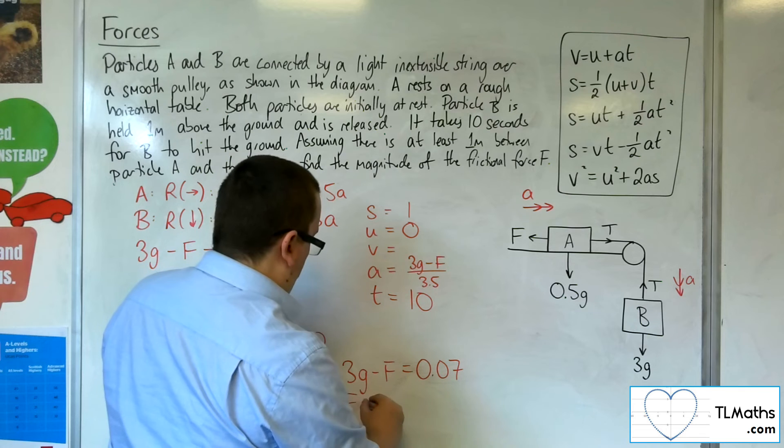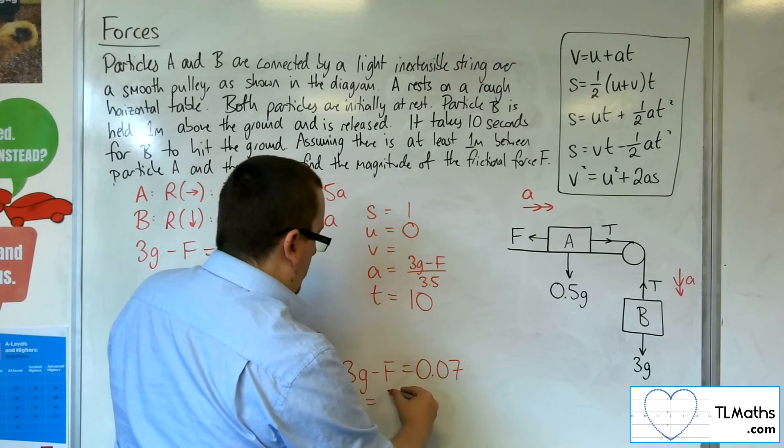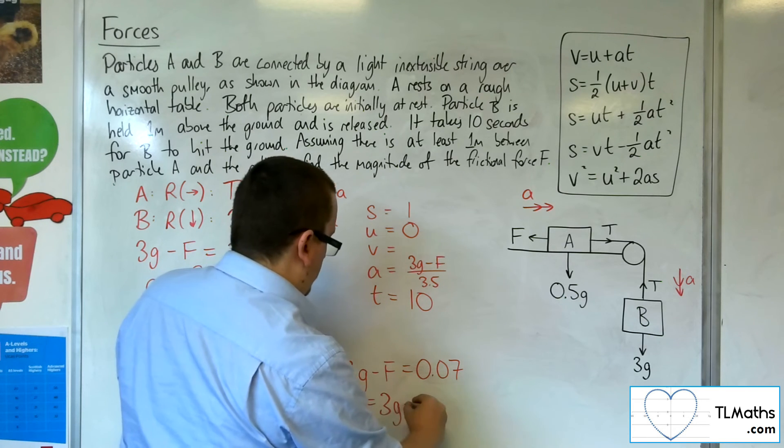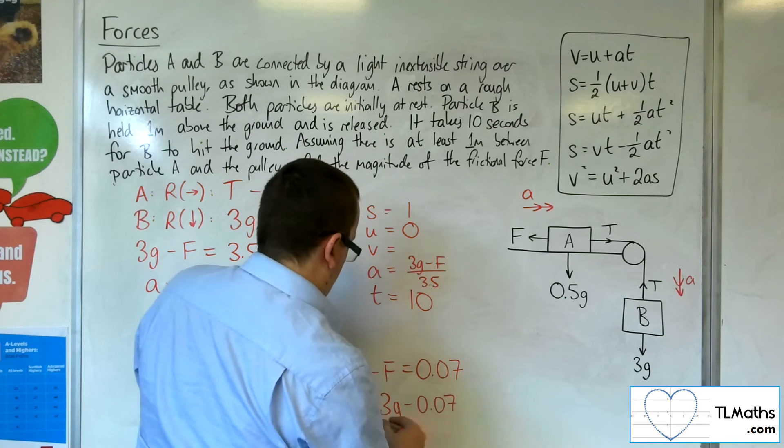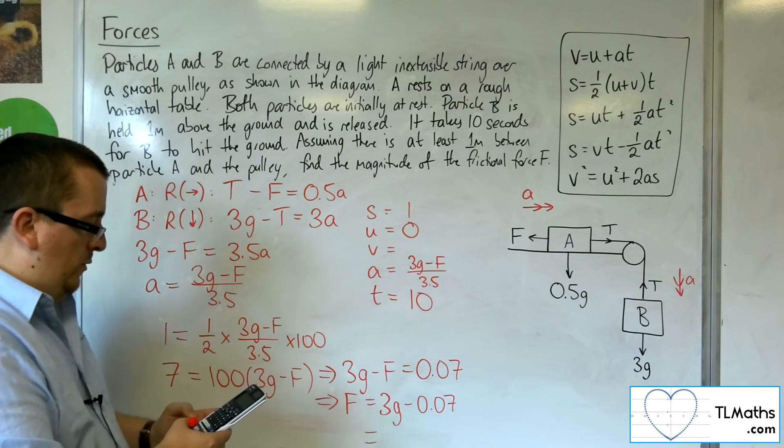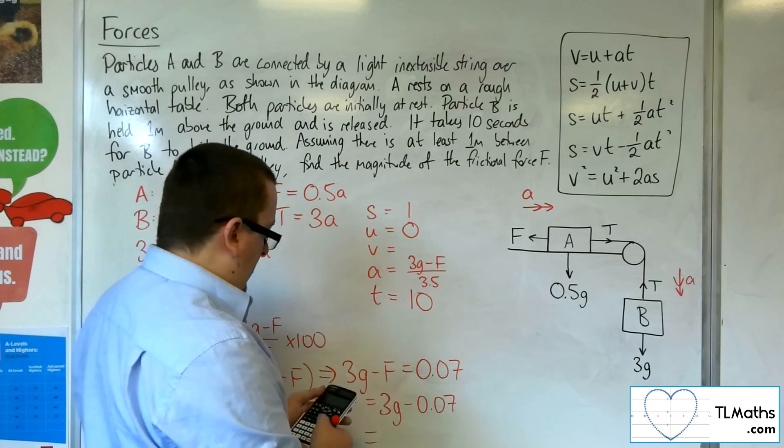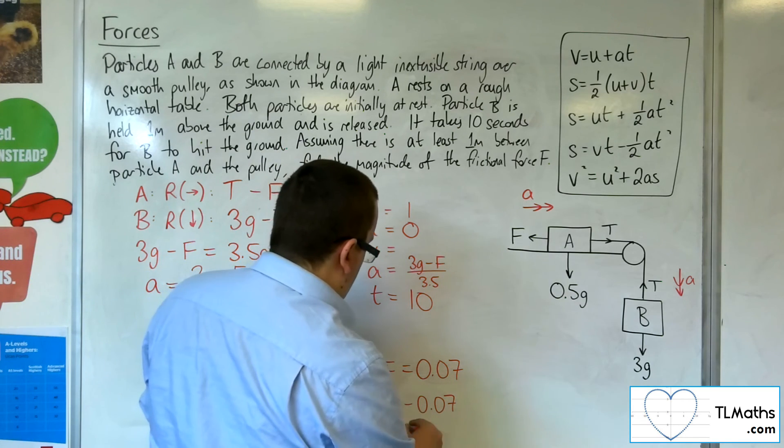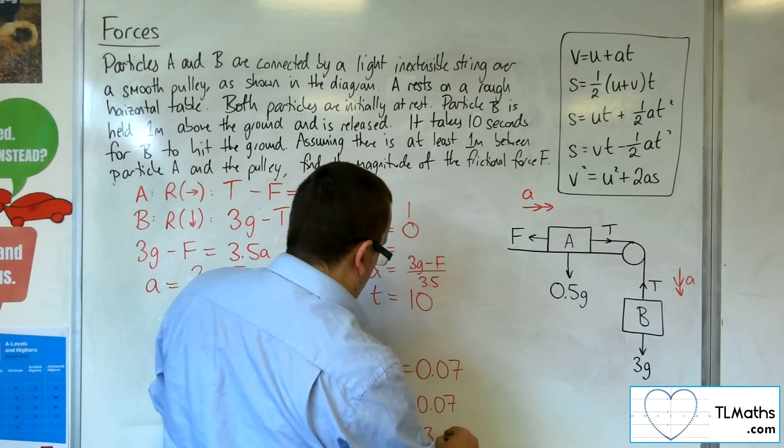And then, if I add the F to both sides, and then subtract the 0.07 from both sides. So, we've got 3 times G, take away 0.07, and that gets me 29.33 newtons.